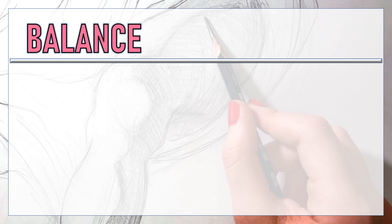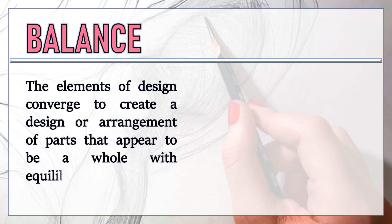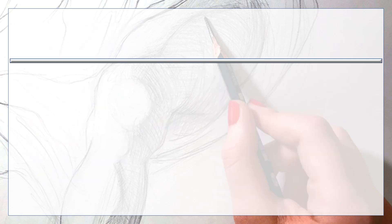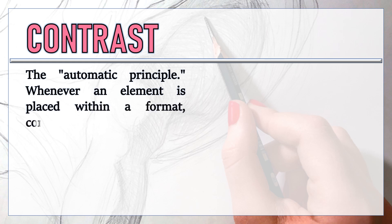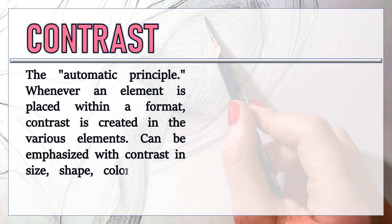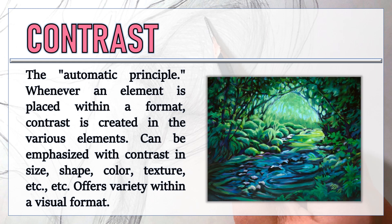First is balance — the elements of design converge to create an arrangement of parts that appear to be a whole with equilibrium. Next is contrast, also called the automatic principle. Whenever an element is placed within a format, contrast is created. Elements can be emphasized with contrast in size, shape, color, texture, etc., which offers variety within a visual format.